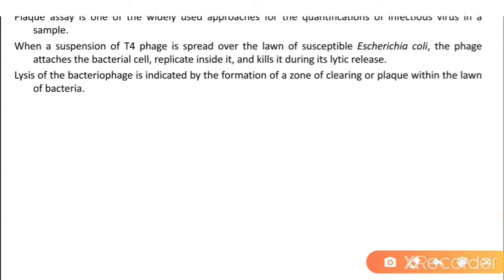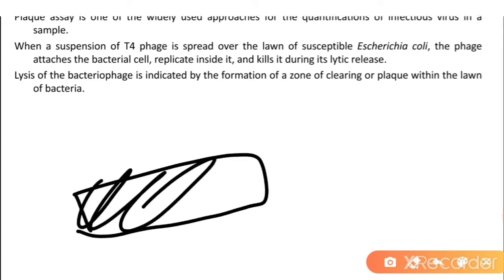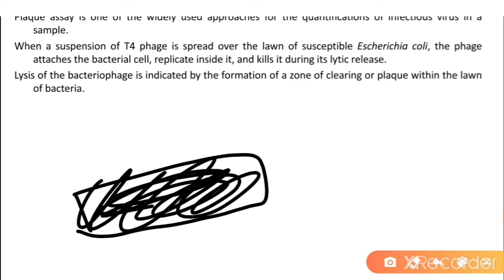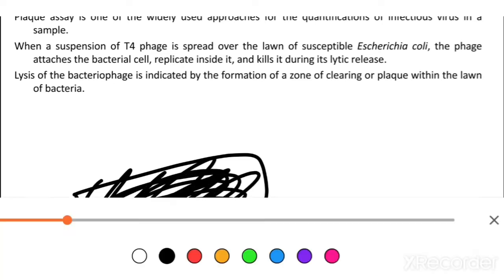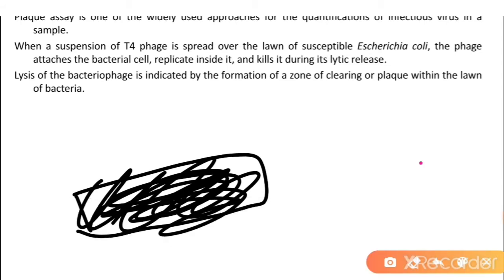To perform the assay, we take one media plate and spread an E. coli culture on it. At the same time, we spread a suspension of bacteriophage on the same media, then incubate it. After incubation, cleared zones — known as plaques — will form. The formation of these cleared zones indicates lysis of the bacterial cells.